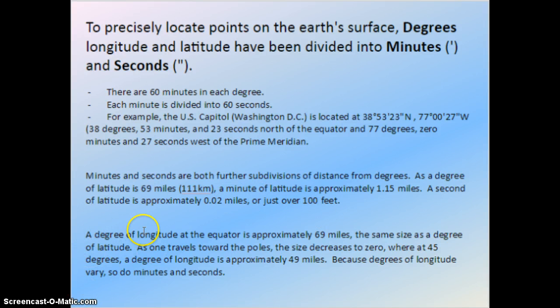You'll need to keep in mind that a degree of longitude at the equator is approximately 69 miles, so the same size as a degree of latitude. But as one travels toward the poles, the size decreases to zero, where at 45 degrees, and you find this on table 1-1, a degree of longitude is approximately 49 miles apart. So because degrees of longitude vary, so do minutes and seconds. It's not the same equidistance apart as latitude lines are.